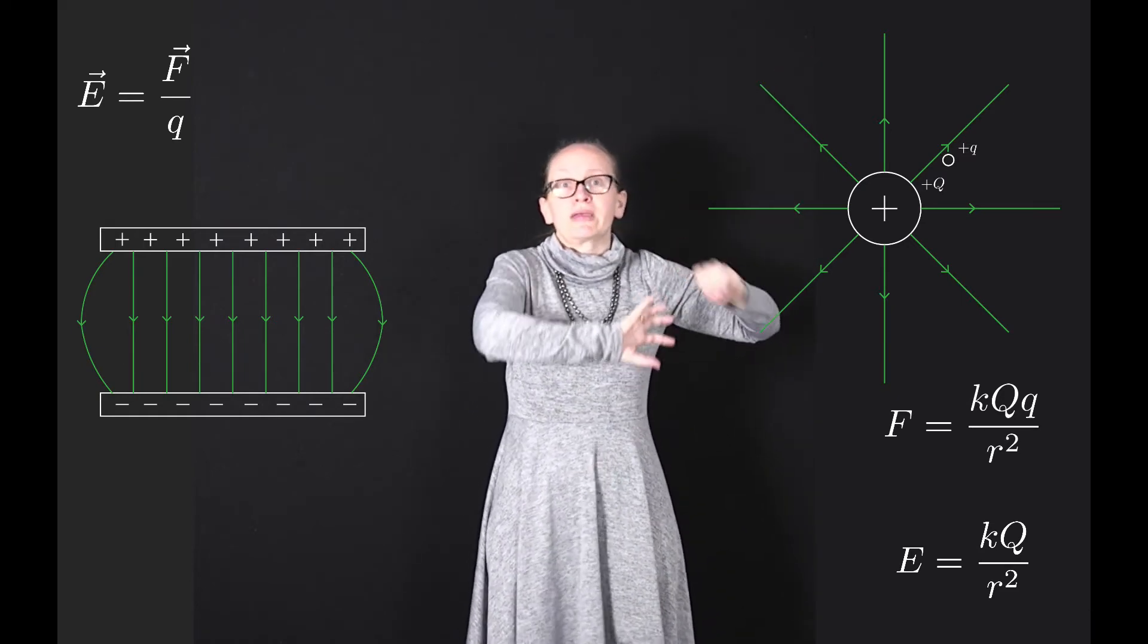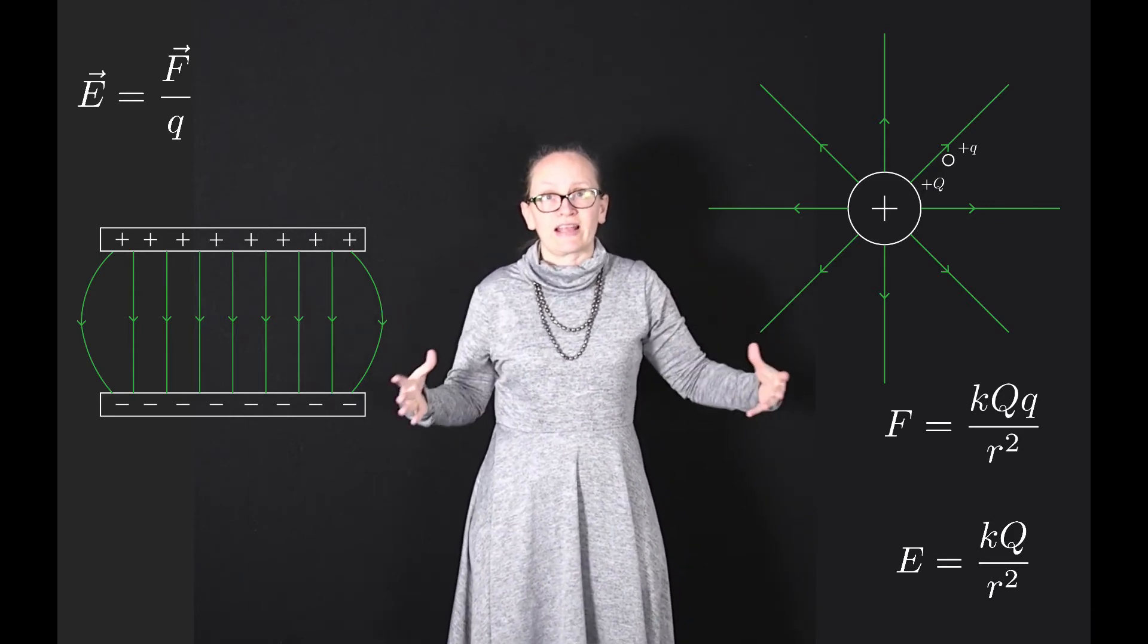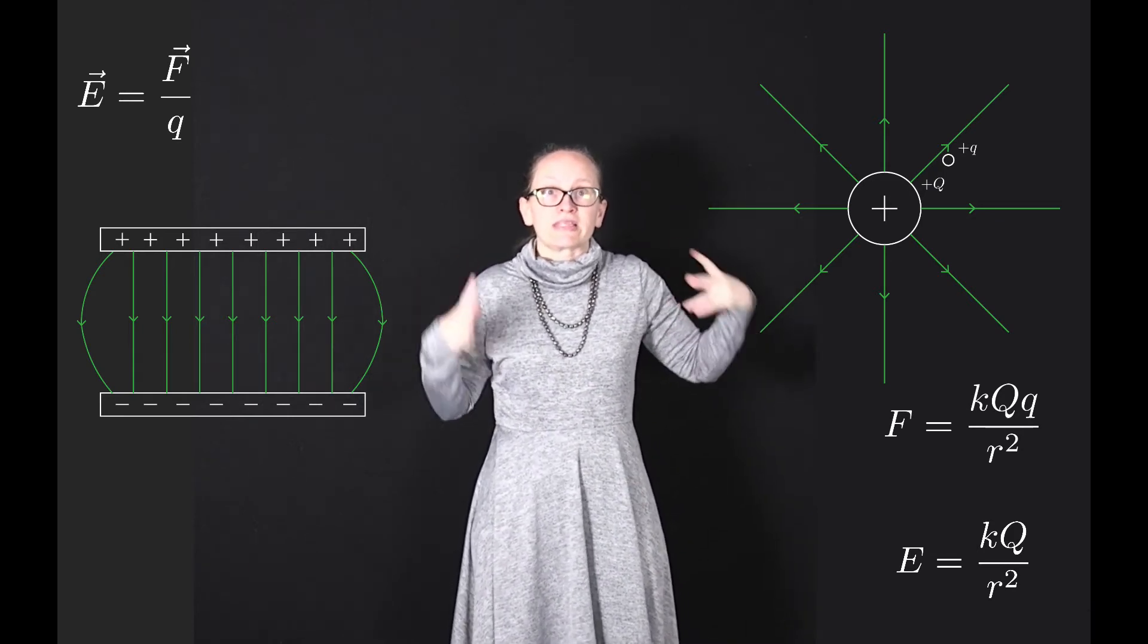If we let go and no longer hold it there, it's going to fly away from big Q. So by moving it closer to big Q we've actually given it some stored energy, which is actually known as potential energy.